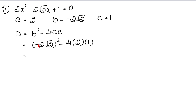Minus times minus gives plus. 2 times 2 is 4, and √2 times √2 is 2, so that gives 4 times 2 equals 8. Then 4 times A times C: 4 times 2 times 1 equals 8. So D equals 8 minus 8, which is 0.